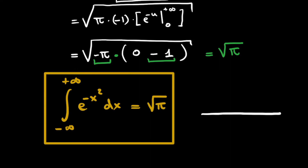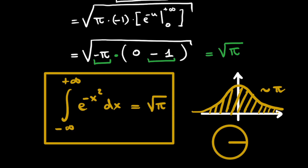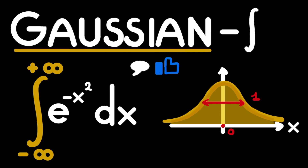This is a quite interesting result, because this integral represents the area under a bell curve, which occurs everywhere in statistics. For example, if you plot the height of every human on the planet, the result forms a bell curve, and the area under that curve has a factor of pi in it. We all know pi as the ratio of the circumference of a circle to its diameter — how these two are connected is a very interesting problem we'll leave for another video. That brings us to the end of this video.